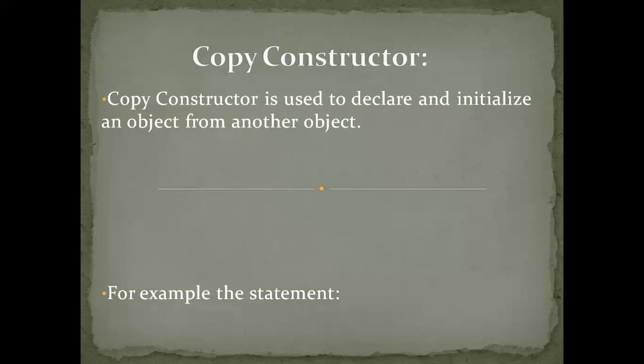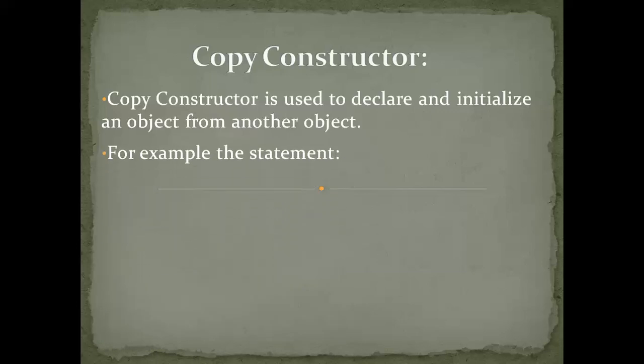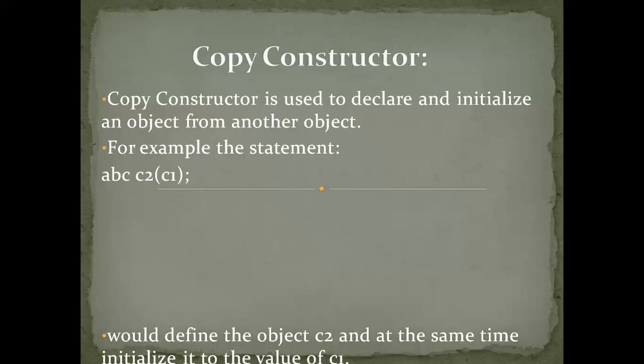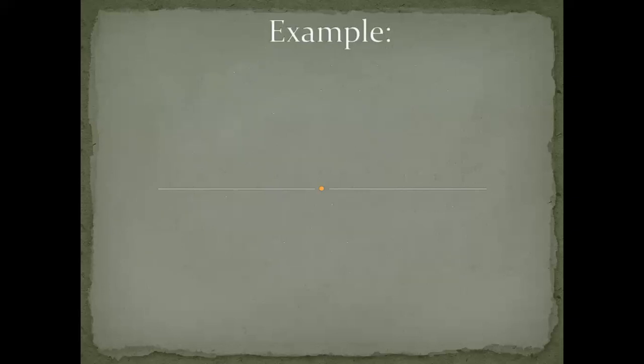Copy constructor: A copy constructor is used to declare and initialize an object from another object. For example, it would define the object c2 and at the same time initialize it to the value of c1. The process of initializing through a copy constructor is known as copy initialization.